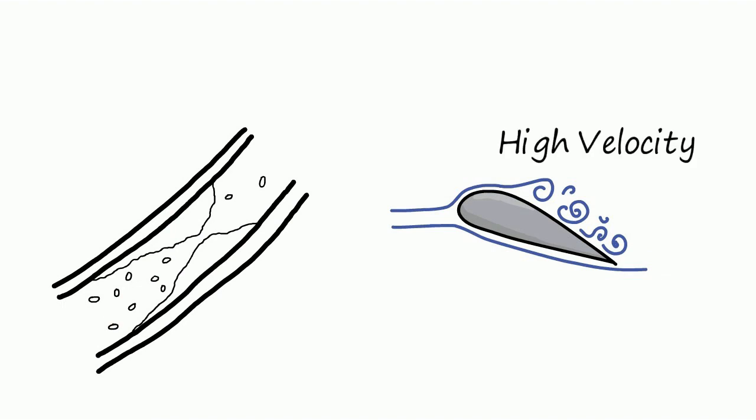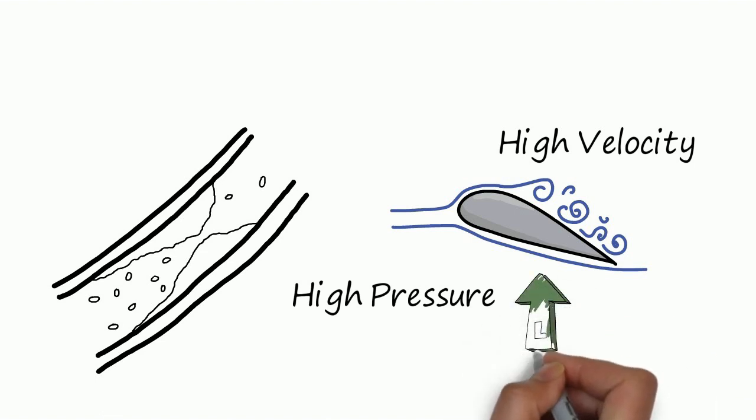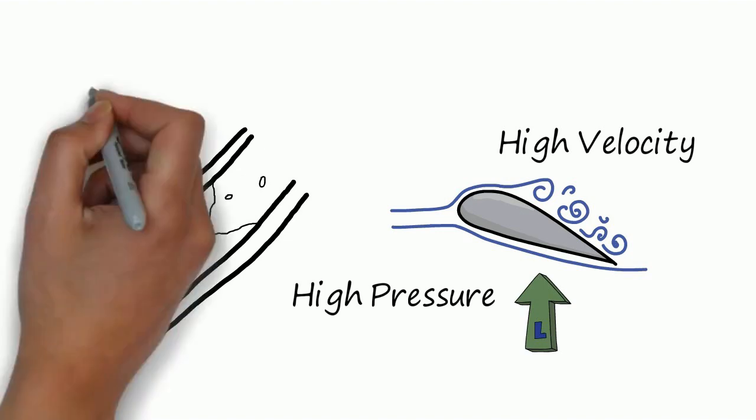On the top of the aerofoil shape wing, the velocity of air is higher compared to the lower side of the wing. And from Bernoulli's principle, we can say that pressure on the lower side is higher than on the top side. This mainly helps to fly the airplane.